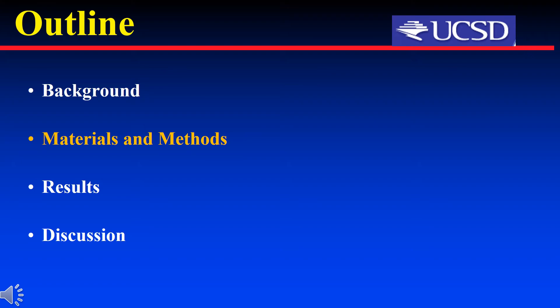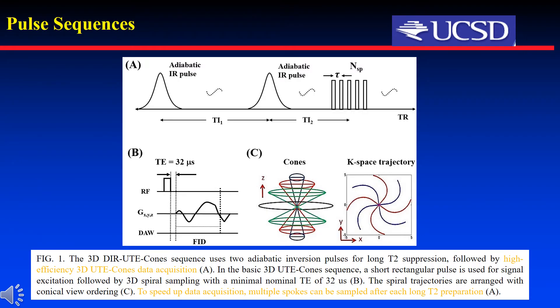The following are the materials and methods. The proposed 3D DIR-UTE-CONES sequence uses two adiabatic inversion pulses for long T2 suppression, followed by high-efficiency CONES data acquisition. In the basic sequence, a short T2 rectangular pulse is used for signal excitation, followed by 3D spiral sampling with a nominal TE of 32 microseconds. The spiral trajectories are arranged with coordinated view ordering. To speed up data acquisition, multiple spokes can be sampled after each DIR preparation.